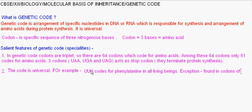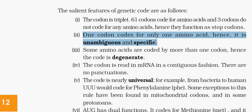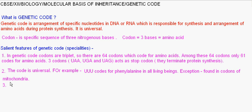Now there are two more terms given, that the code is unambiguous and specific. What does it mean? The code is unambiguous and specific. It means one codon codes for only one amino acid. For example, as I told, triple U, three uracils will only code for phenylalanine. They will never code for any other amino acids.